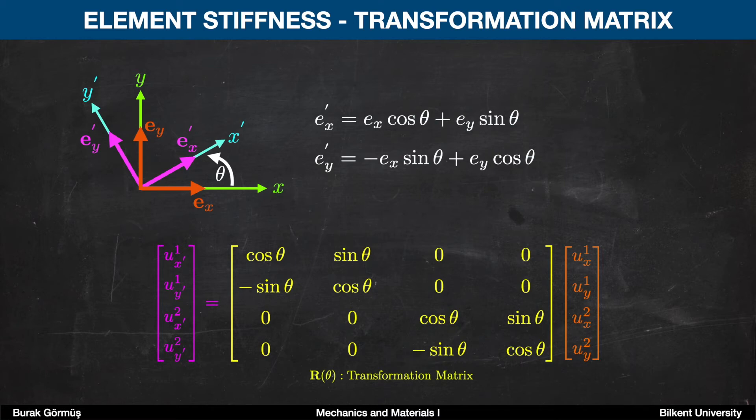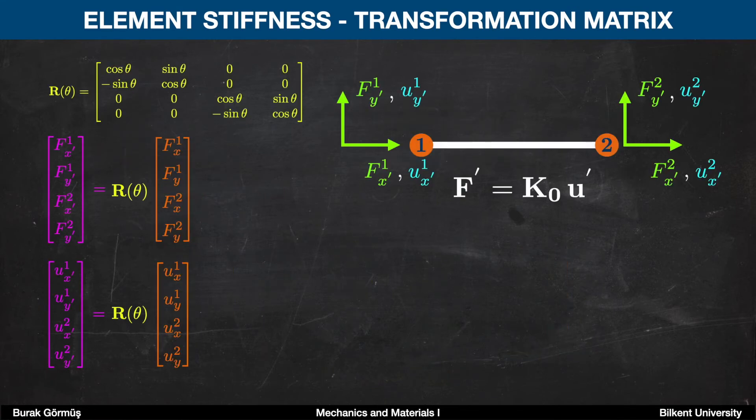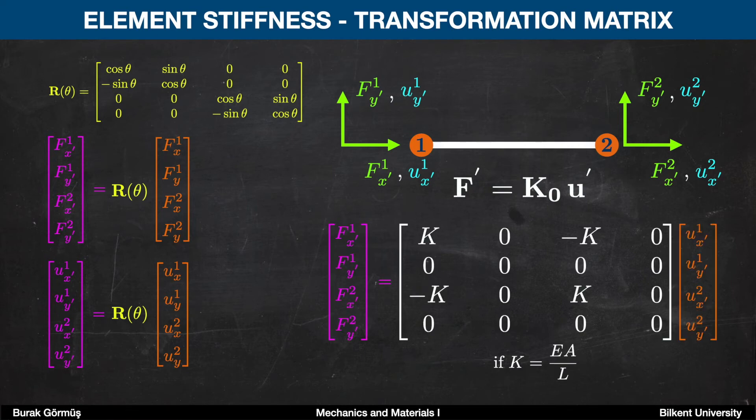Let's combine the transformation matrix concept with the equations explaining the relationship between force and displacement in the local coordinate system. If we assume that a bar sits horizontally on the coordinate system, we can say that the force vector in the local coordinate system is equal to K0 multiplied by the displacement vector in the local coordinate system. If we use the stiffness matrix as shown here, we can express the relation. For example, fx' for node 1 is equal to K0 multiplied by ux' for node 1 minus K0 multiplied by ux' for node 2, and K0 here is equal to EA over L.